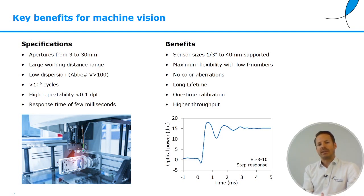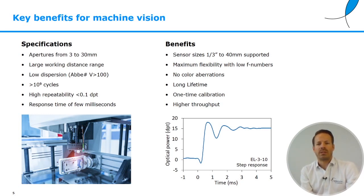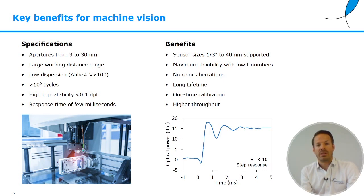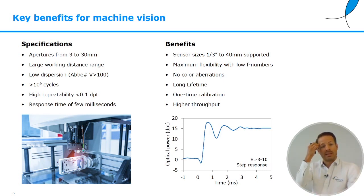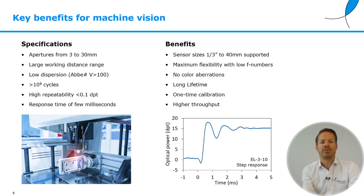The aperture sizes we provide on our liquid lenses are 3 to 30 millimeters, typically addressing sensor sizes of one-third inch to about 40 millimeters of image diameter. We can cover very large working distance ranges, typically from infinity down to about 10 centimeters — or in a high-magnification situation, something like a hundred times the depth of field you would otherwise have. This gives you maximum flexibility with low F numbers.